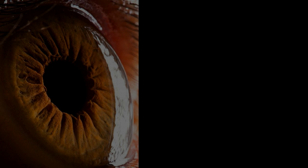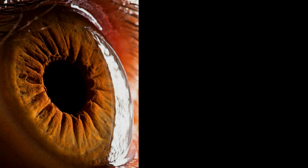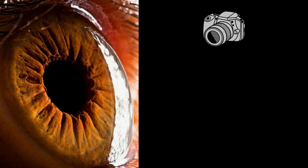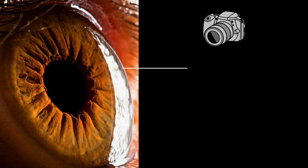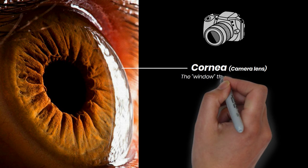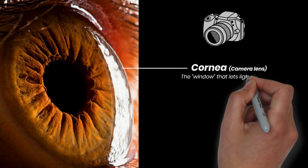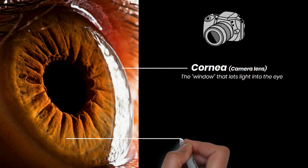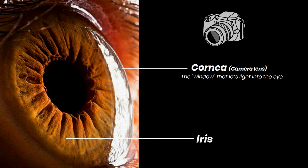This is the human eye up close. The eye is like a camera. The clear front surface is called the cornea. This part of the eye acts as the camera lenses. You can say that this is the window that lets light get into the eye. The next part of the eye is the iris, which is a thin, circular structure in the eye.